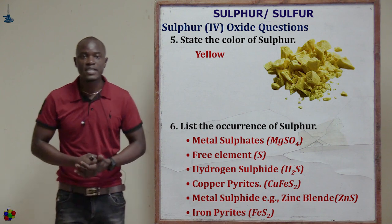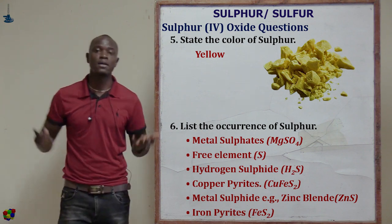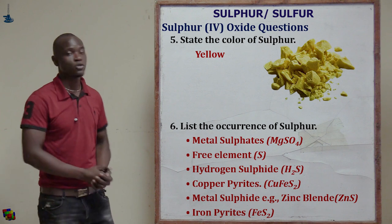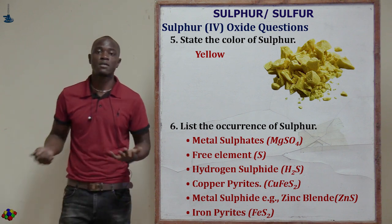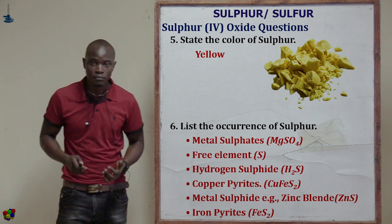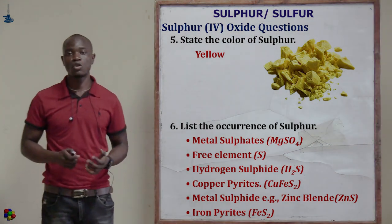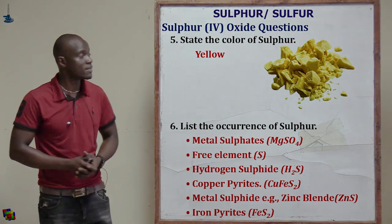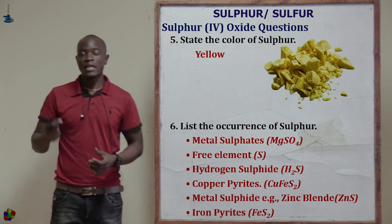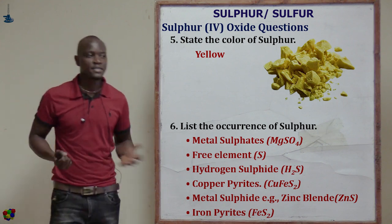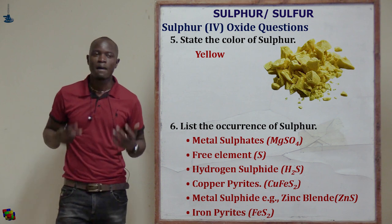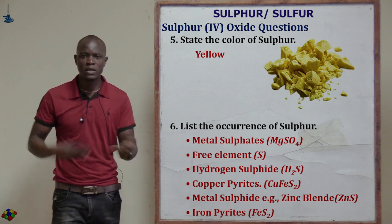Question five asks: state the color of sulfur. Sulfur is yellow in color — that's the simplest question you'll ever get in an exam. Question six asks: list the occurrences of sulfur — how does sulfur occur in the environment? First, sulfur occurs as a free element. Apart from that, it occurs in a combined state.